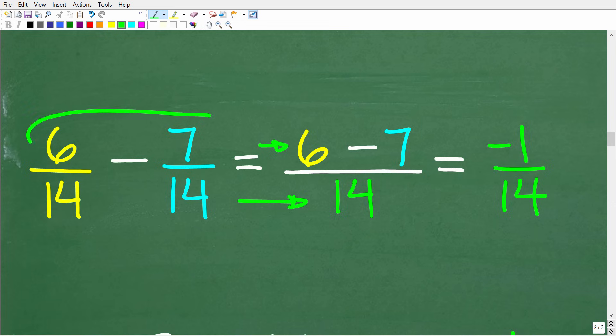so how do we change a 2 into a 14? Easy, multiply it by 7. But again, we have to multiply the numerator by that number as well. So we end up with 7 over 14. So now we have common denominators.